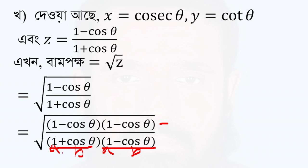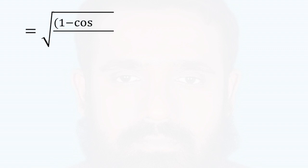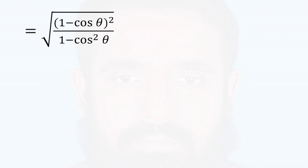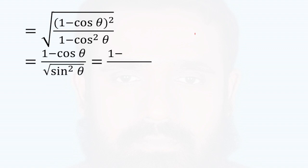That is, 1 plus cos theta times 1 minus cos theta equals 1 squared minus cos squared. So one minus cos theta whole square over one squared minus cos squared theta. Since 1 squared is just 1, and since 1 minus cos squared theta equals sin squared theta, we apply that identity here.